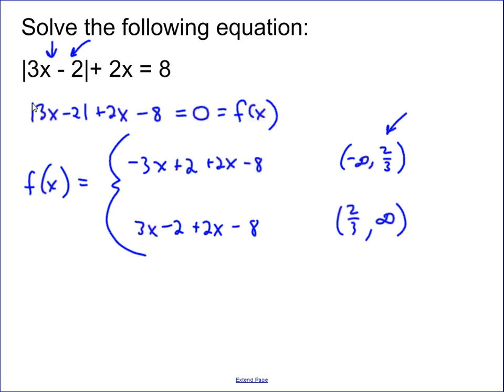We simplify both of these, and that's going to give me negative x minus 6 for the top one. The bottom one is going to give me 5x minus 10. So I've got this function that is negative x minus 6 from negative infinity to 2 thirds, and then from 2 thirds to infinity, it's 5x minus 10.